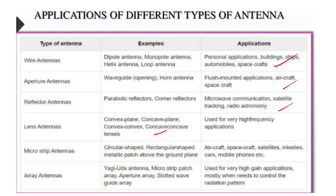Microstrip antennas include circular, rectangular, and metallic patch types, mounted above the ground plane. Applications include aircraft, spacecraft, satellite, missiles, cars, and mobile phones. Microstrip and strip antenna applications also include aperture and high-gain types, with notable radiation patterns.